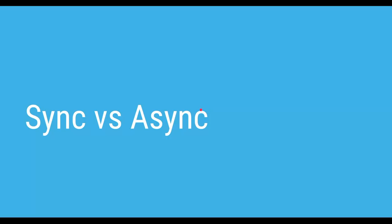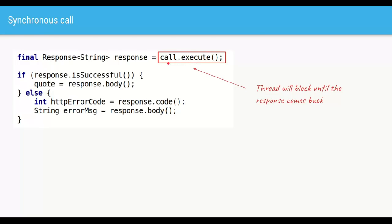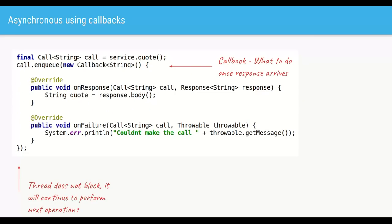Now let's look at synchronous vs asynchronous calls. When we use execute, it performs the IO operation and blocks the thread until the HTTP call completes — this is synchronous. If you don't want the thread to block, use callbacks. Instead of calling execute, call enqueue, which requires a Callback object. We create an anonymous inner class implementing Callback with two methods: onResponse for a successful response, where we extract the quote, and onFailure for network-level failures where we can retry or log the error.